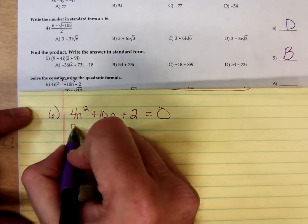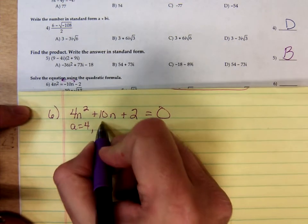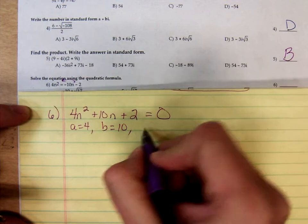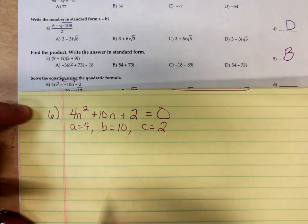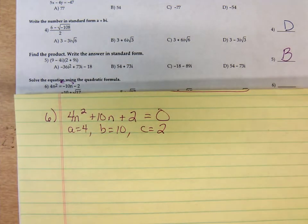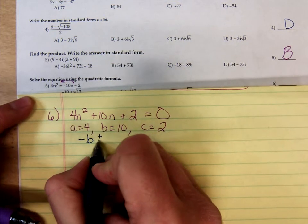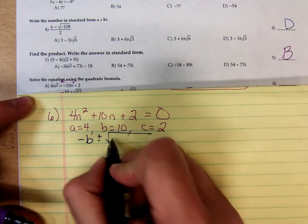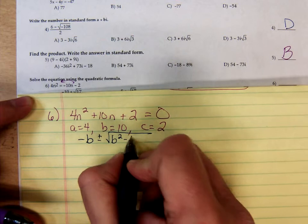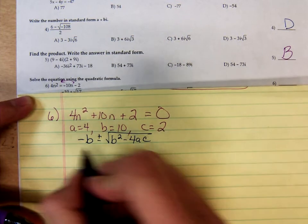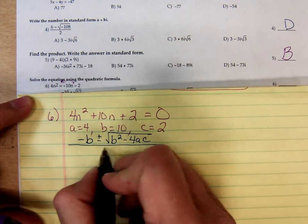So here's our A is 4, B is 10, C is 2, and here's the quadratic formula. Negative B plus minus the square root of B squared minus 4AC all over 2A.